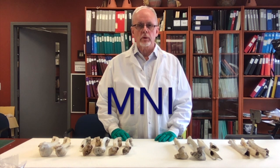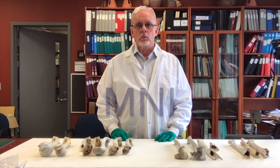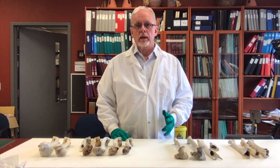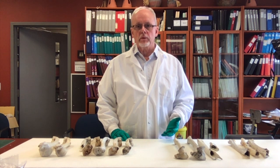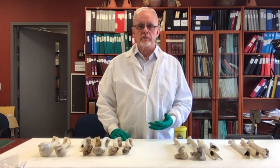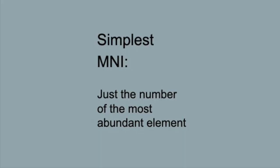Minimum number of individuals, or MNI, is one of the methods that archaeologists have used in order to get some idea of the number of animals that contributed to an assemblage of animal bones. It's just the number of the most abundant element.